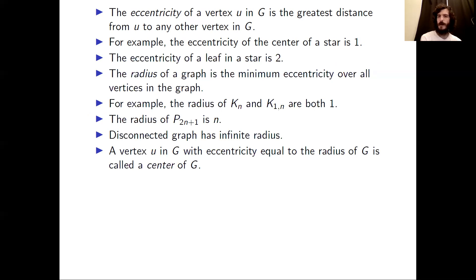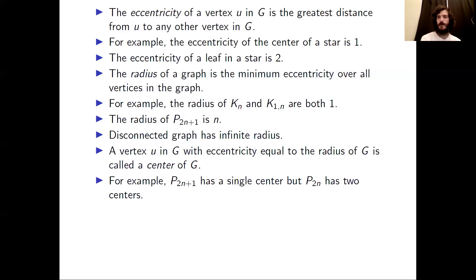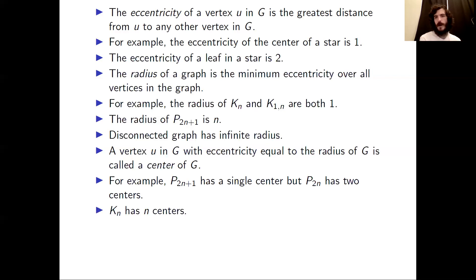A vertex whose eccentricity equals the radius of the graph has a special name — it is called the center of the graph, the same name used for the center of a star. For a path of order 2n+1 there is a single center: the vertex right in the middle. For a path of order 2n there are two centers, since it has an even number of vertices. The complete graph of order n has n centers — every vertex qualifies.